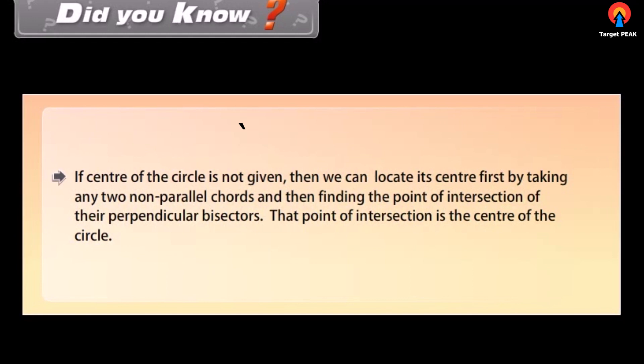Did you know: if the center of the circle is not given, then we can locate its center first by taking any two non-parallel chords and then finding the point of intersection of their perpendicular bisectors. That point of intersection is the center of the circle.